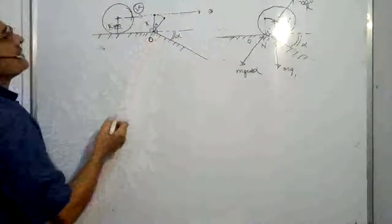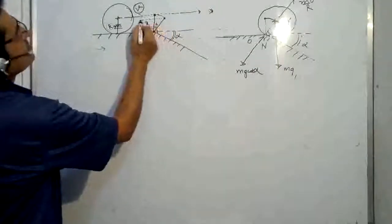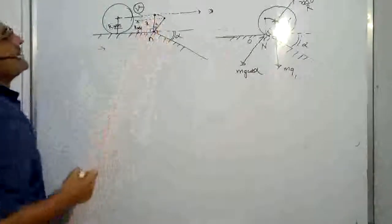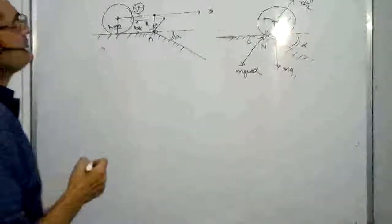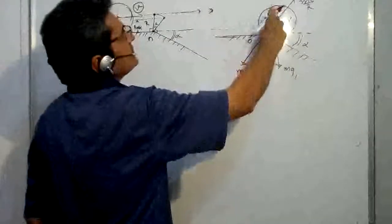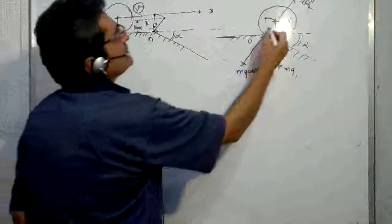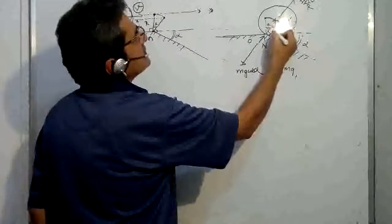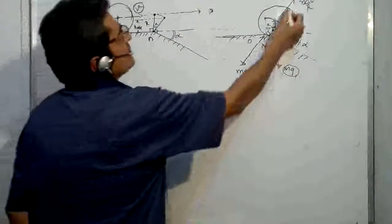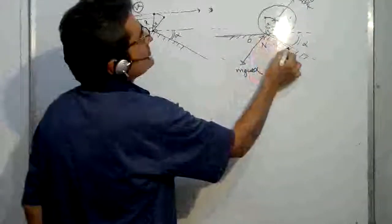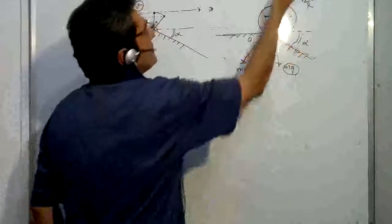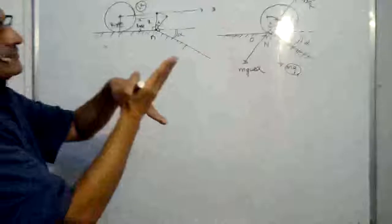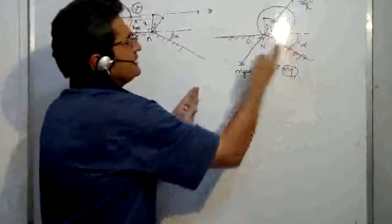This angle will remain as alpha, so the new height of the center of mass will be R·cos(alpha), and this is the initial height of the center of mass. Now this angle is alpha — the downward force component and the plane along which it is moving after rolling over. Take perpendicular to the plane; in such problems either you take along the plane or perpendicular to the plane.